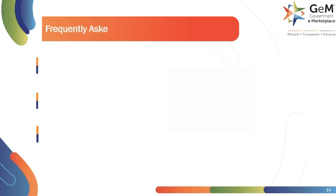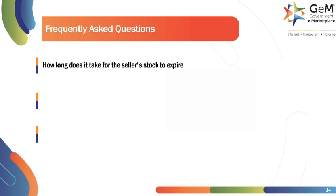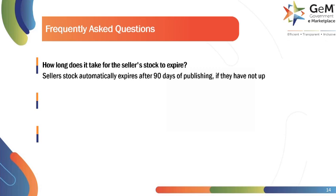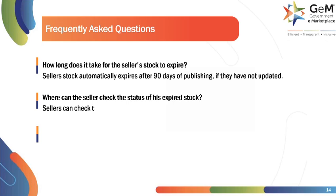Here are the frequently asked questions. How long does it take for the seller's stock to expire? Seller's stock automatically expires after 90 days of publishing. If they have not updated, where can the seller check the status of his expired stock? Sellers can check the same either in the Published tab or Expired Offerings tab in the Dashboard section.